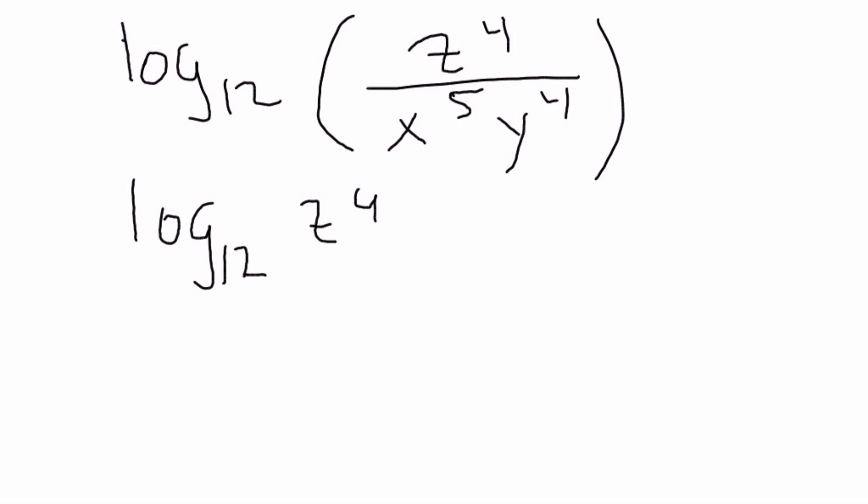So, let's try one more, which is going to be the log base 12 of z to the 4th over x to the 5th y to the 4th. So, we notice here that we have two underneath the division symbol. Now, a lot of people get confused with this, and especially going from the other way. So, let's try this. So, now we have this one done.